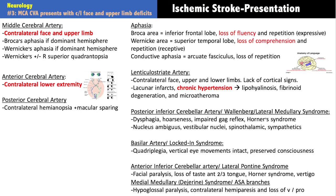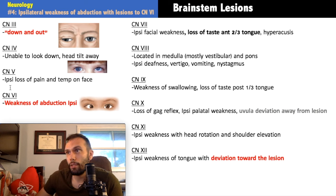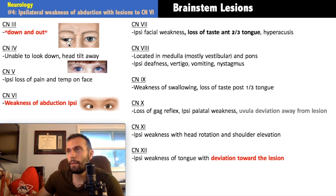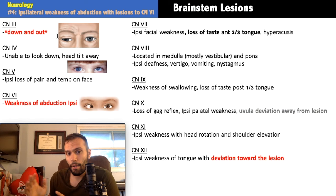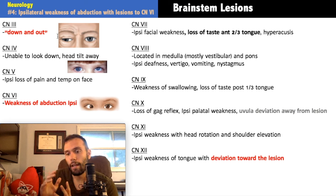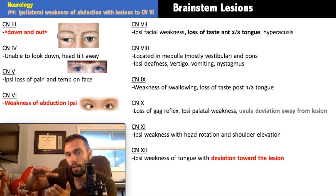Now let's talk about what happens when specific cranial nerves are knocked out. Cranial nerve three — most ocular muscles — gives a down-and-out pupil. It's midline in the midbrain. Important: if the cause is ischemic/neurologic, the pupil is often spared. Parasympathetic fibers run on the top and bottom of the oculomotor nerve — a tumor or aneurysm will compress these fibers first, causing mydriasis before the down-and-out deviation appears.